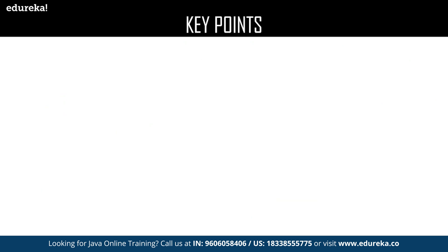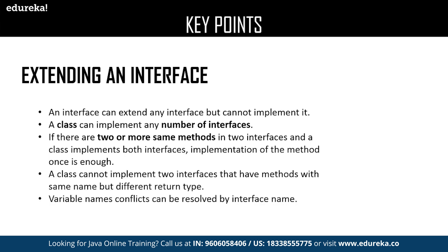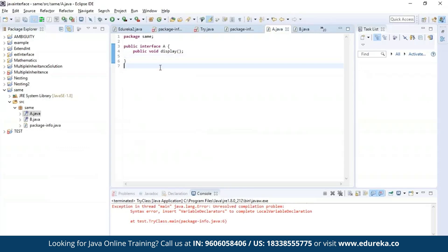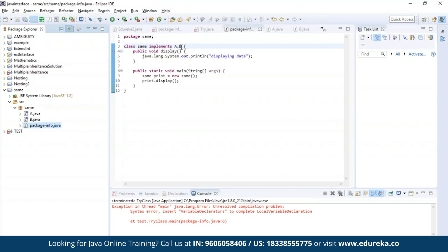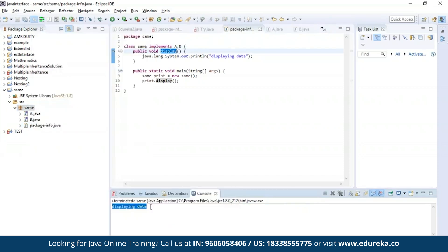The next key point is extending an interface. An interface can extend any number of interfaces but cannot implement them, whereas a class can implement any number of interfaces. If two or more same methods exist in different interfaces, the class can implement all the interfaces but one single method is enough. A class cannot implement two interfaces with methods having the same name but different return types. I have defined interface A and interface B, both with the same display method, and implemented both in class 'same' — the program compiled successfully and output 'displaying data'.